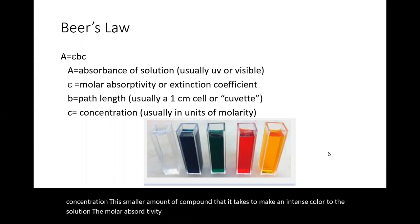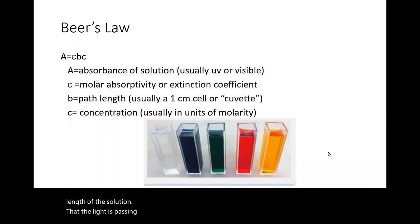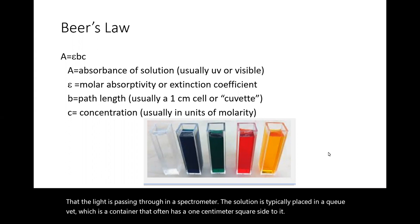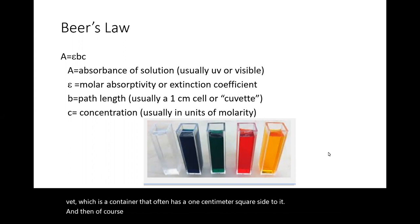The path length B depends on the length of solution that the light passes through. In a spectrometer, the solution is typically placed in a cuvette, which is a container that often has a one centimeter square side. The concentration is usually known and expressed in units of molarity.